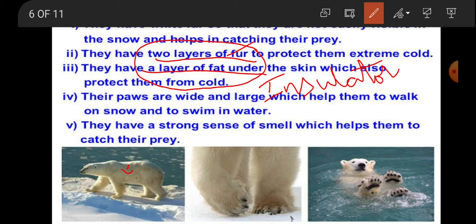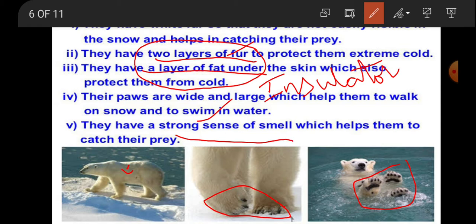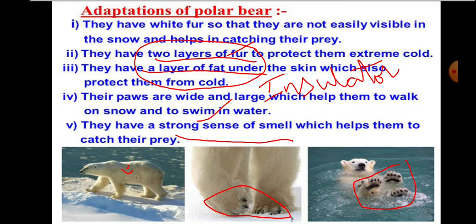The two-layer fur and the fatty layer under the skin together help the animal protect itself from extreme cold. The polar bear also has a wide, spread-out paw that helps it walk comfortably in the snow and also swim in water — polar bears are very good swimmers. Additionally, polar bears have a strong sense of smell; they can detect prey from up to one to one-and-a-half kilometers away while hiding in the snow. These are the adaptations of the polar bear towards its habitat.